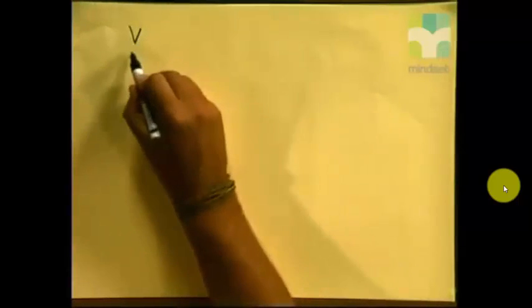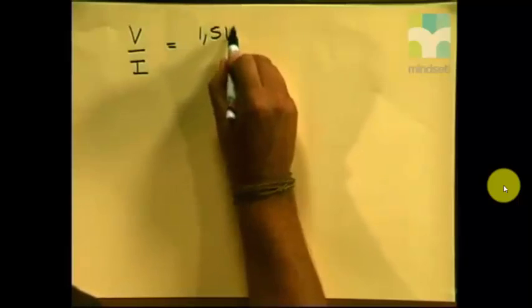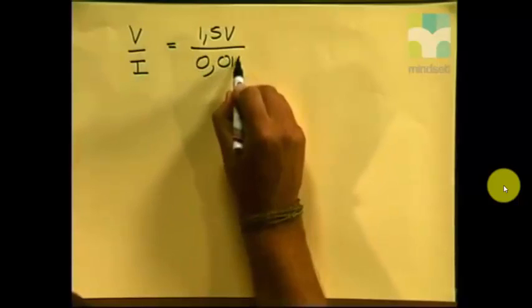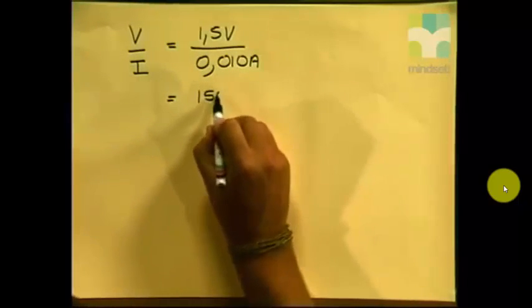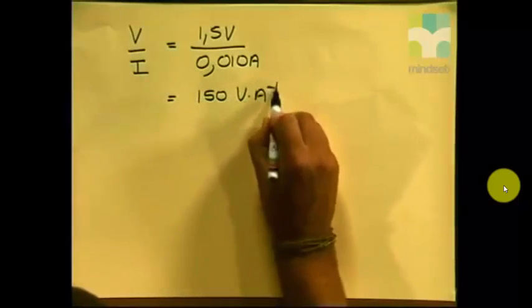Now that we've got all our values in the correct SI units, let's now do the calculation to work out the ratio between potential difference and current. In other words, V divided by I. Let's have a look at this calculation. If we take the ratio V divided by I, and we take our first reading, where potential difference was 1.5 volts, and we divide it by our current reading of 0.010 amperes, we will now get a reading of 150 volts per ampere.